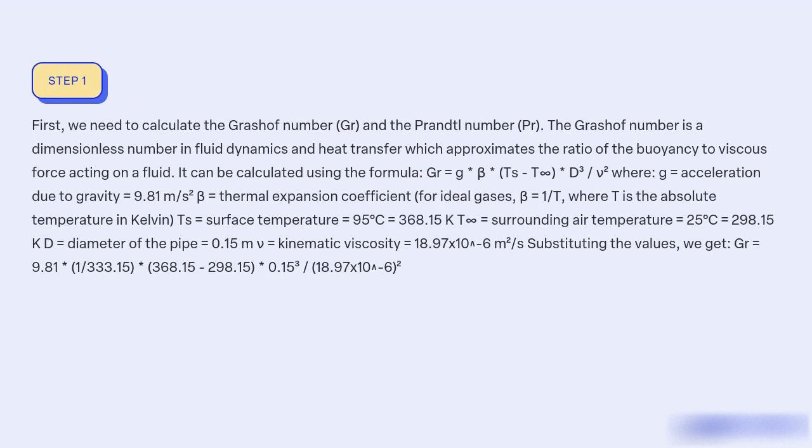First, we need to calculate the Grashof number (Gr) and the Prandtl number (Pr). The Grashof number is a dimensionless number in fluid dynamics and heat transfer, which approximates the ratio of the buoyancy to viscous force acting on a fluid.